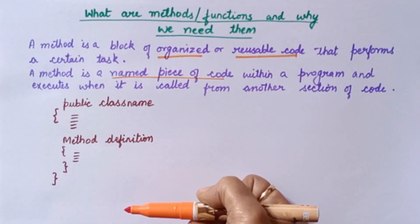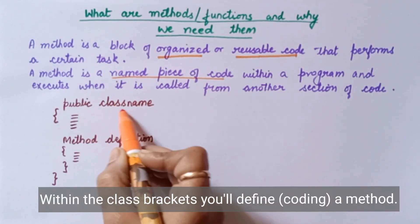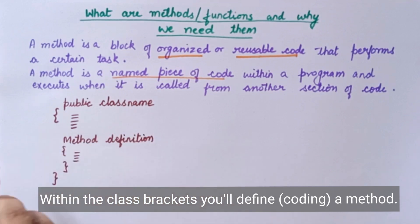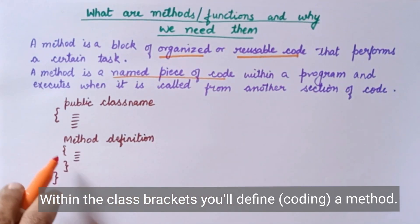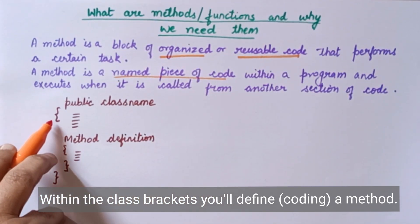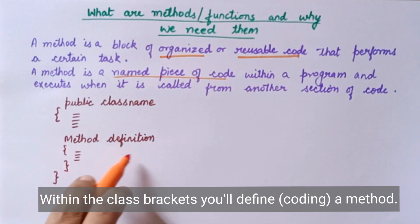Which way can we write a method? You will have a public class with a name, and under the class you will have a starting bracket and a closing bracket. Under the class, you will have a method.